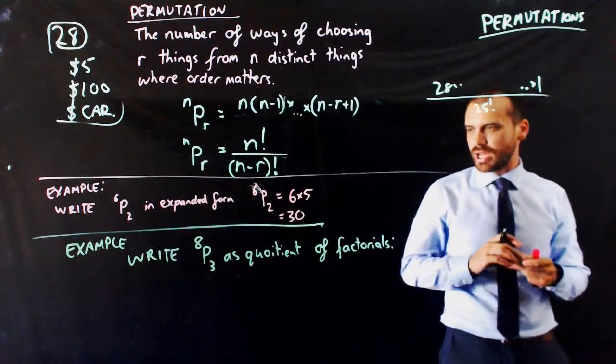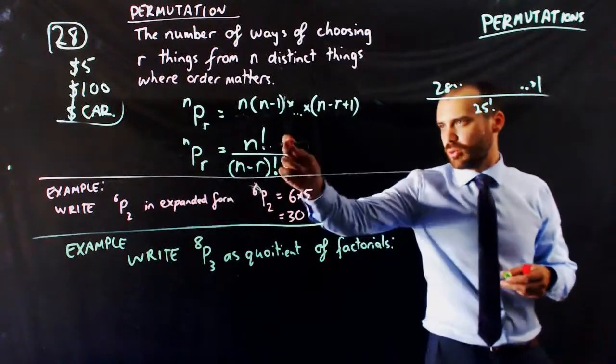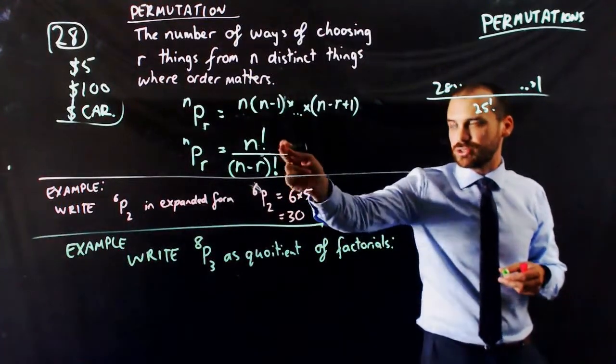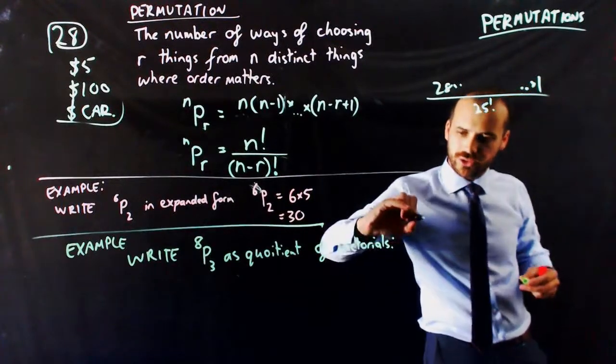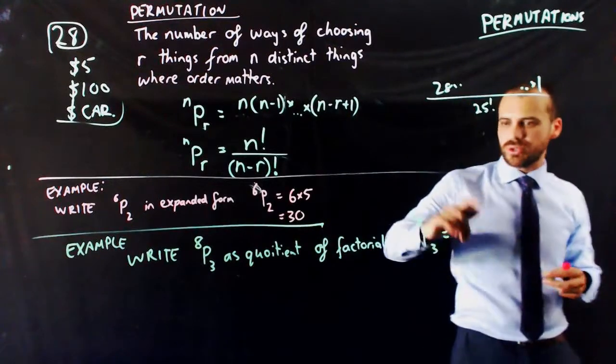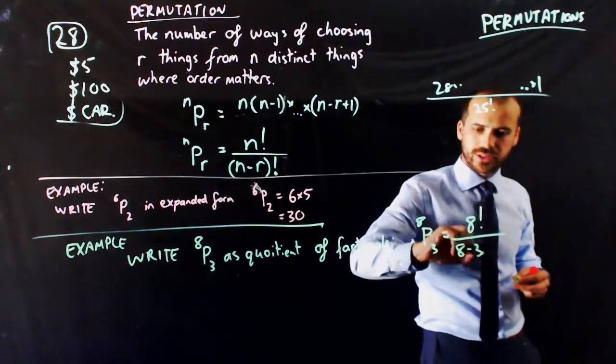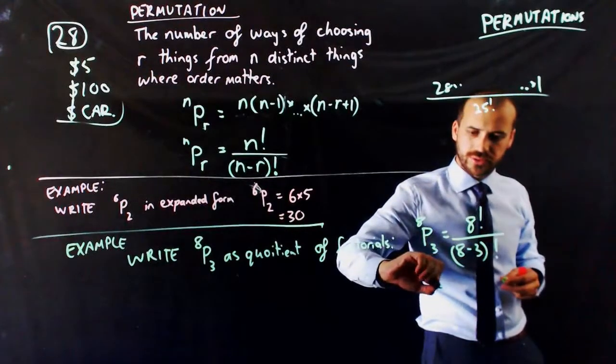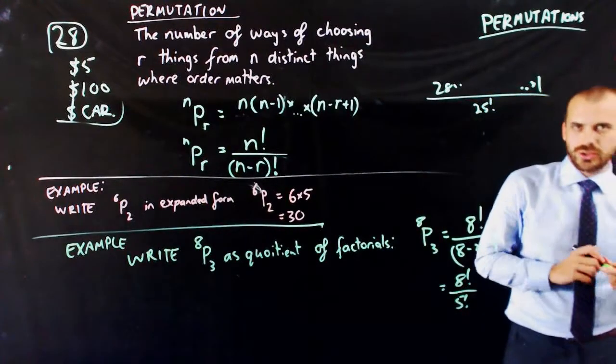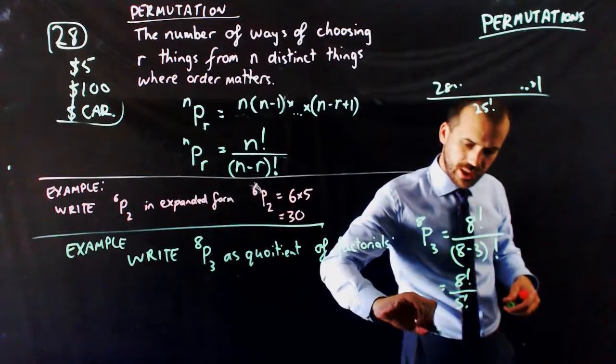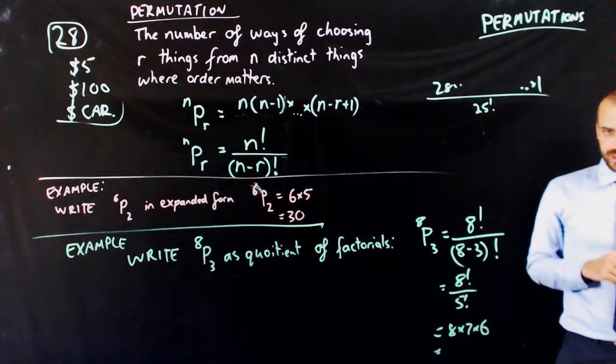And just another example, slightly different, write 8P3 as a quotient of factorials. That's really just saying a quotient, which is divided by a quotient of factorials. That's a factorial and that's a factorial. So, 8P3 as a quotient of factorials will be equal to 8 factorial over 8 minus 3 factorial, which is 8 factorial over 5 factorial. And you can type that into your calculator or you can simplify it to be 8 times 7 times 6. And you can solve it that way instead.